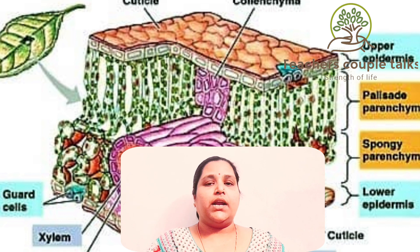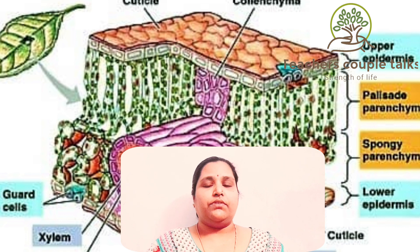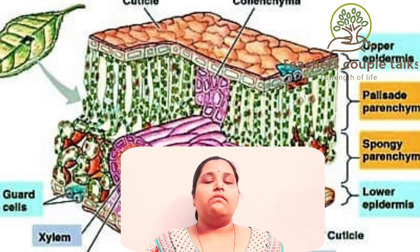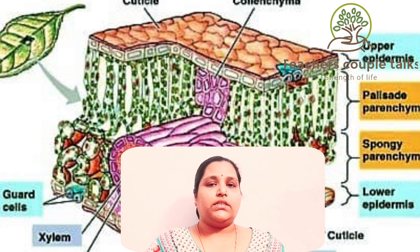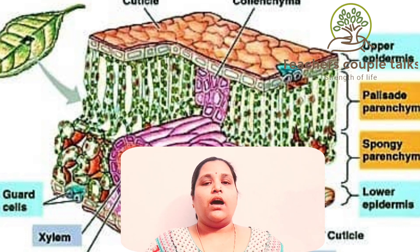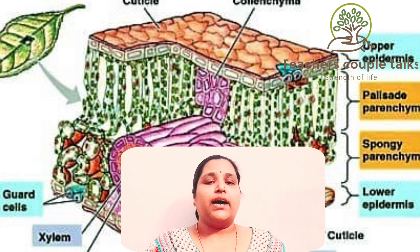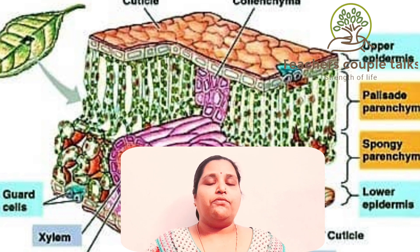In the midrib transection, we can find the vascular bundle. The vascular bundle supports the leaf for its structure. It has xylem on the upper side and phloem on the lower side. Xylem conducts water and phloem conducts food materials.